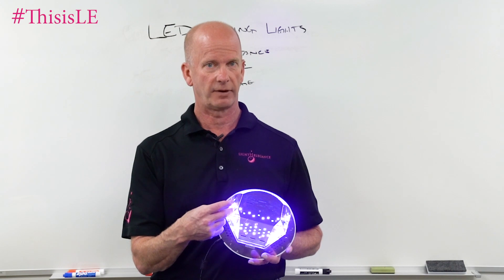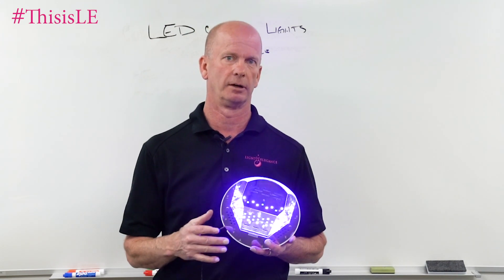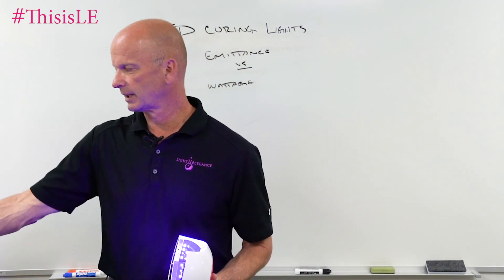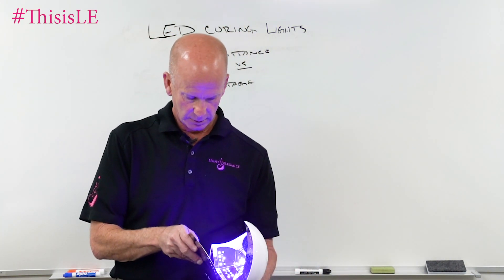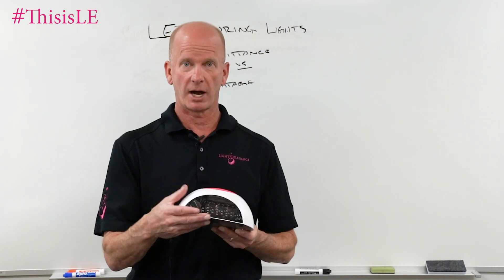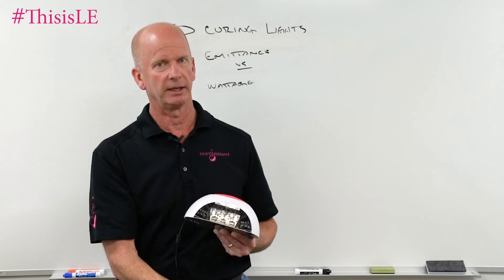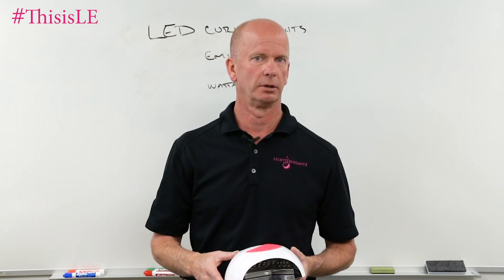Now about emittance. Emittance is actually the measurement of how bright the light or energy coming off the LEDs is. If we put a reflective plate on the bottom of the light, we are converting some of that energy so the LEDs create light that goes down, bounces off the reflective plate, and bounces back — helping to cure or continue to cure that gel product.